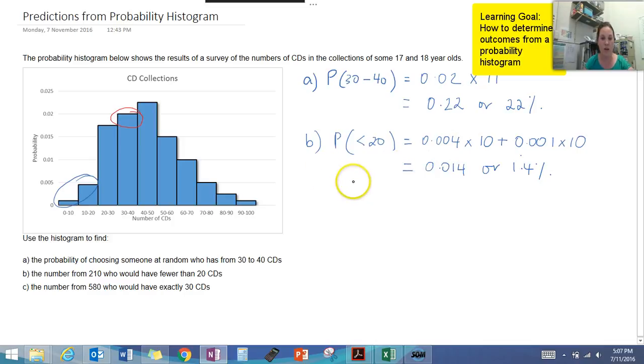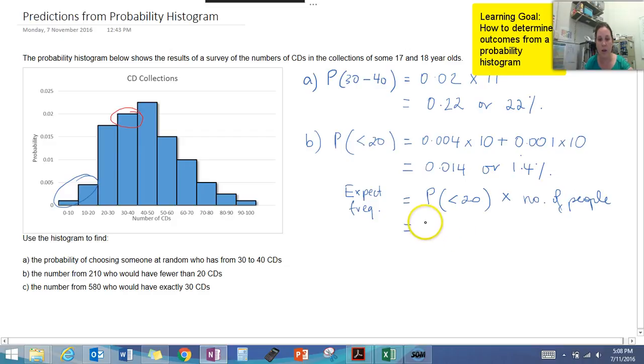We've got 210 people, so we want to know how many people there would be. Expected frequency equals our probability of having less than 20 times our number of people. So that's going to be 0.014 times 210, which equals 2.94. Therefore, approximately 2 people have less than 20 CDs.